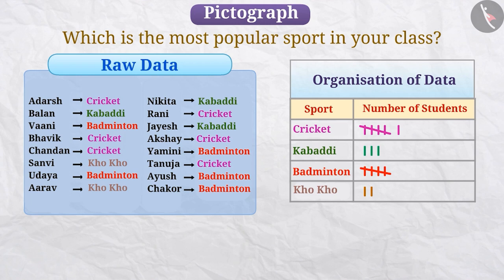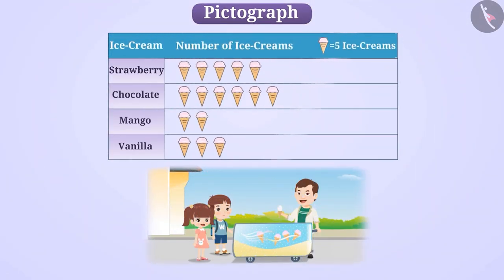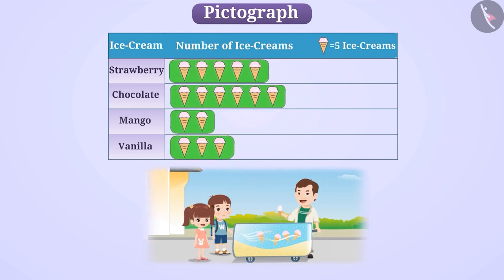Today, we will understand an interesting way to represent data. Look at this table. In this table, the ice cream vendor has shown the name and the number of ice creams sold. Pause the video and try to understand it.